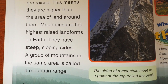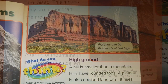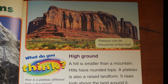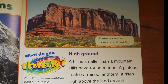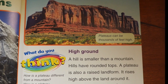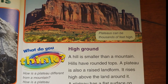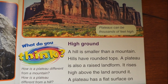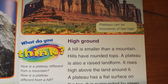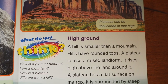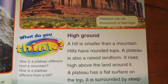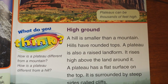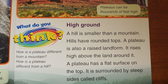A hill is smaller than a mountain. Hills have rounded tops. A plateau is also a raised landform. It rises high above the land around it and has a flat surface on top. It is surrounded by steep sides called cliffs.